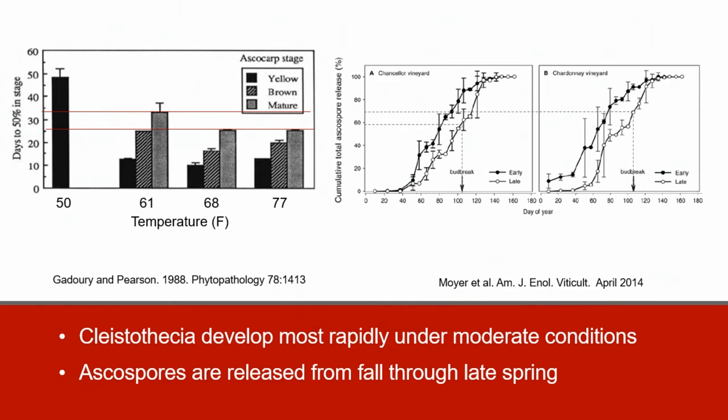The graph on the right shows that over 50 percent of the ascospores are released before the buds even break in the spring. It also indicates that earlier fall-maturing Kleistothesia produced significantly more ascospores than late fall-maturing Kleistothesia.